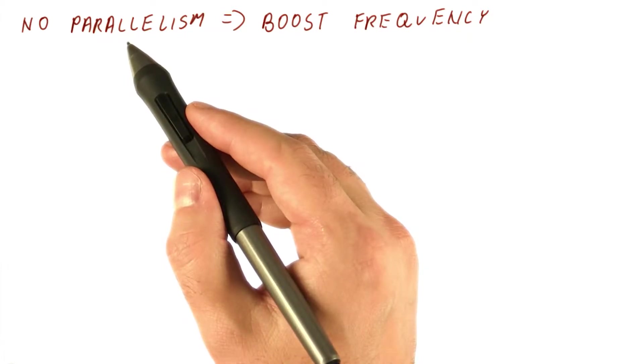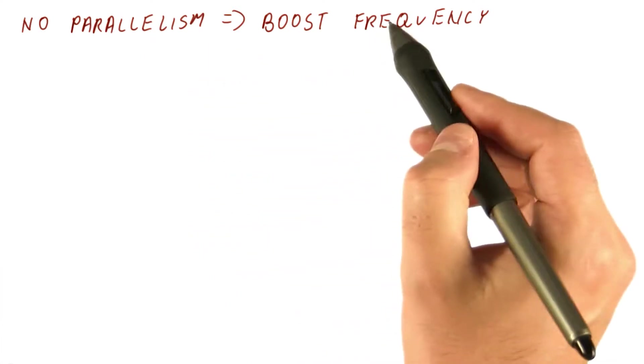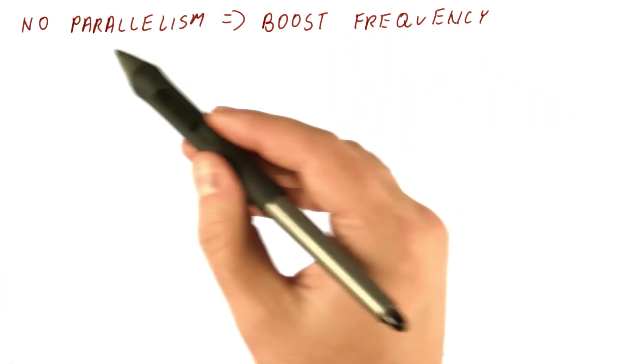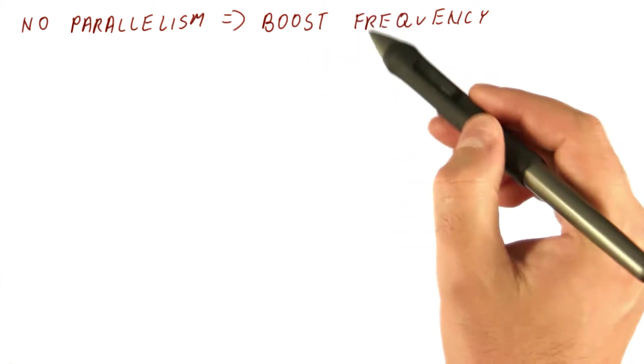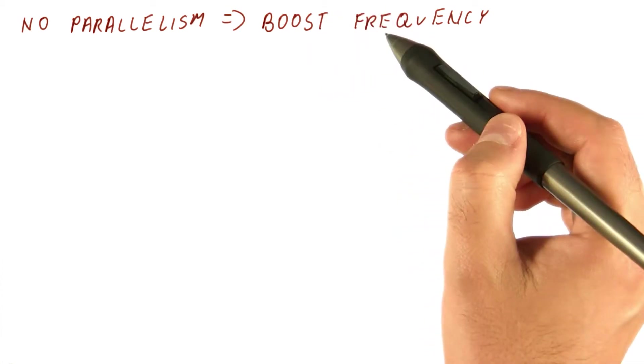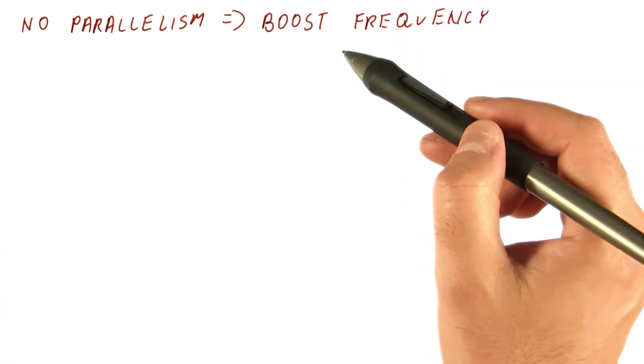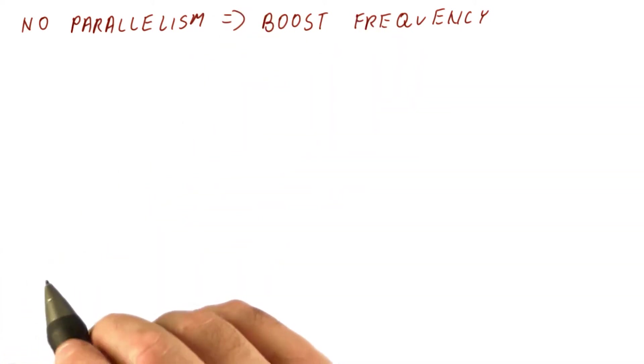But this is only true if we cannot adjust the voltage and frequency so that when there is no parallelism available, we boost the frequency of the one or two active cores so that they get the full power budget of the chip. Modern processors do this.